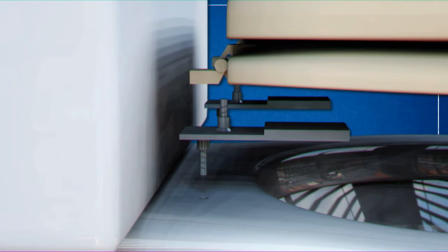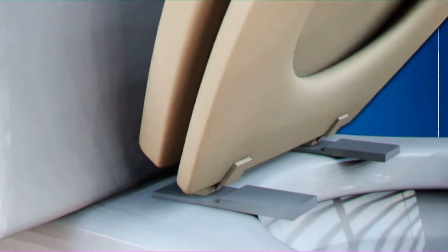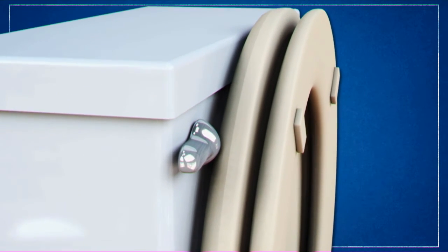This forward placement of the pivot point provides a greater angle for the toilet seat and lid when it is in a lifted position. This angle makes it more likely for the toilet seat to remain in a raised position without having someone to hold it.